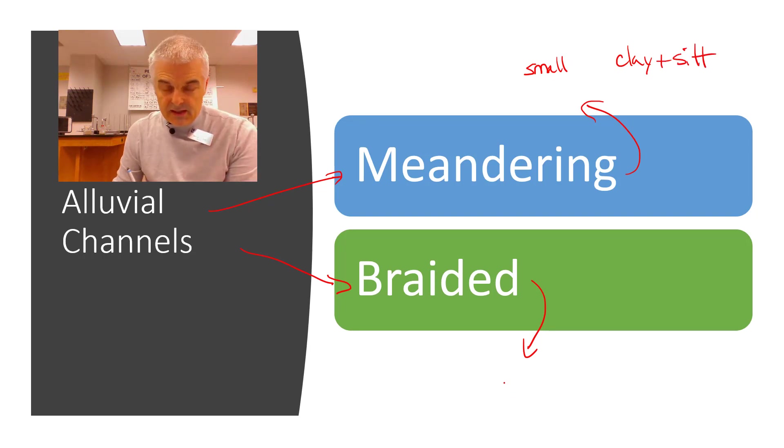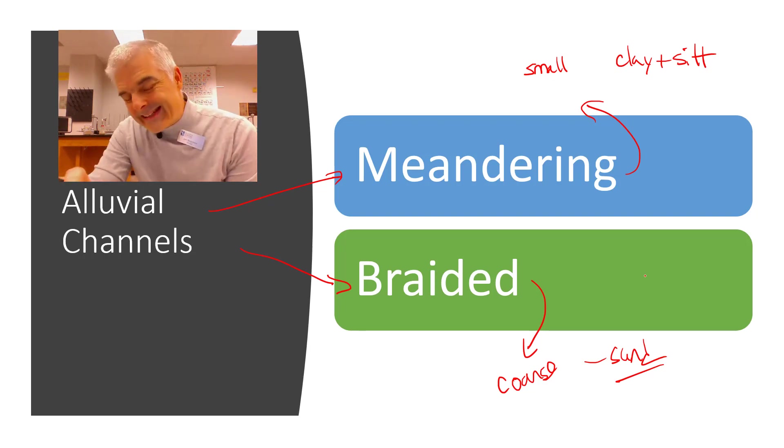And braided channels tend to have more coarse or larger, like sand, etc. Larger particles, the braided rivers. And what it carries changes the shape of it. So that's cool.